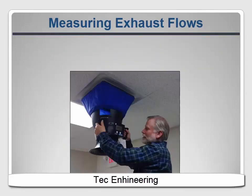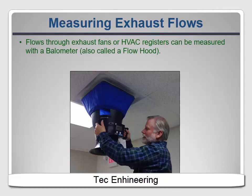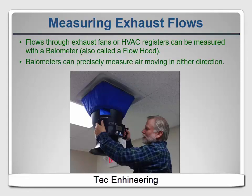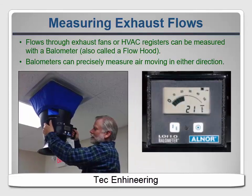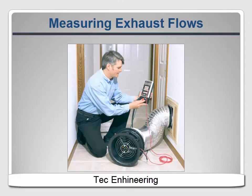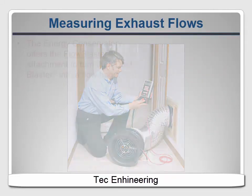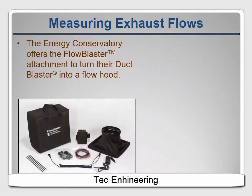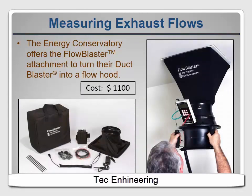Flow hoods, which are also called ballometers, are commonly used for commissioning HVAC systems in commercial buildings. They're accurate and very simple to use — you just tell the device which direction the air is flowing, place the hood over the inlet or outlet, and read the flow from the display. The biggest downside is the price; they start at about $1,500. If you purchase one, you can also use it to measure heating and cooling system flow rates to help diagnose comfort and performance problems. If you already own a duct blaster for measuring duct leakage, the Energy Conservatory sells a kit that converts it into a flow hood; however, at $1,100, it's almost as expensive as a dedicated flow hood, but it's heavier and takes more time to set up.